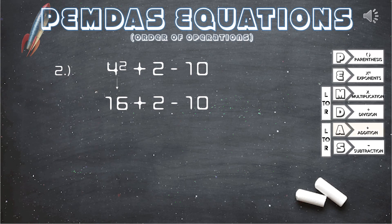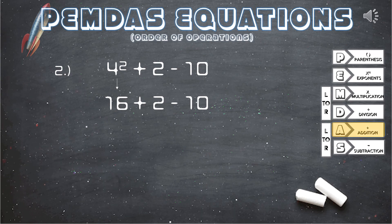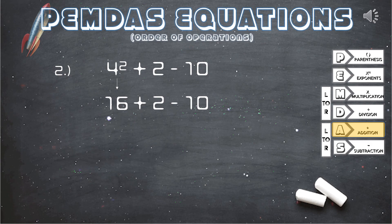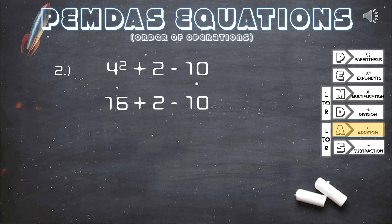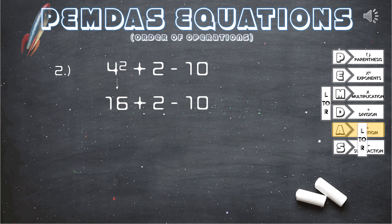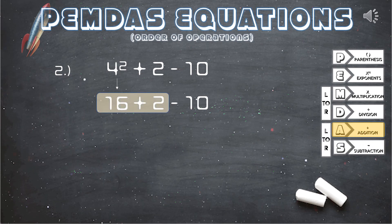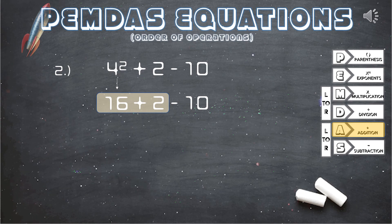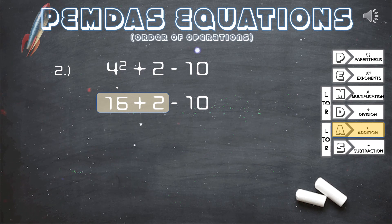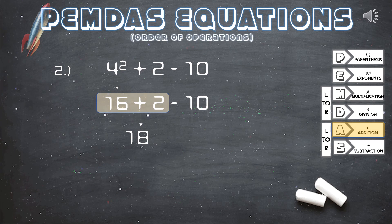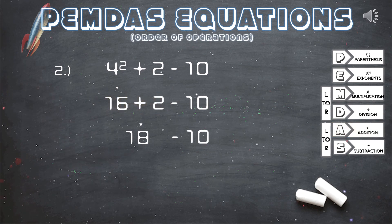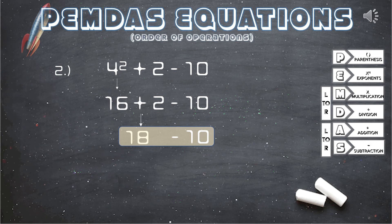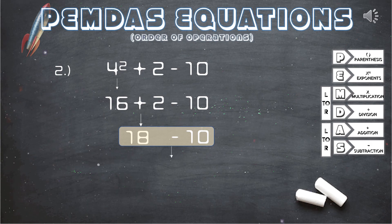Next, the operations that we have left are addition and subtraction. So just like the last equation we solved, when addition and subtraction are the only operations left, we solve it from left to right. And here addition is the first operation, so we will start with that. 16 plus 2, this equals 18. We bring down the rest of the equation and that leaves us with 18 minus 10, and our answer is 8.